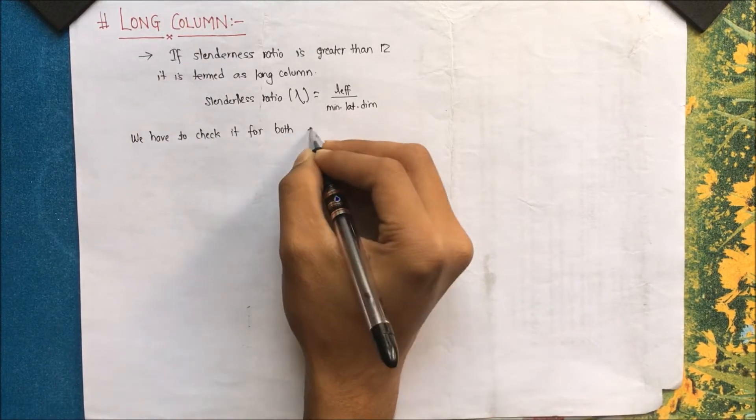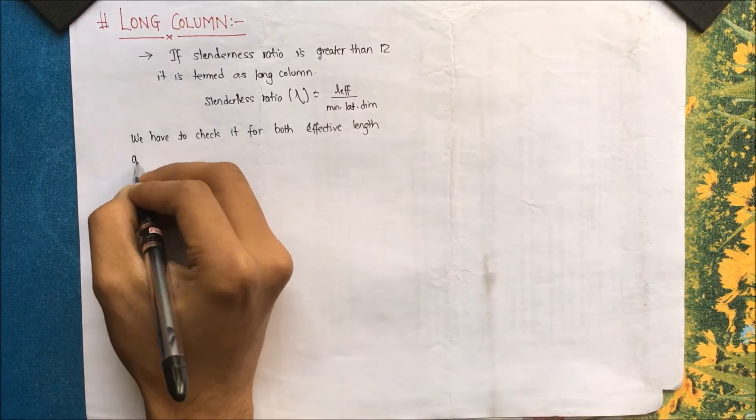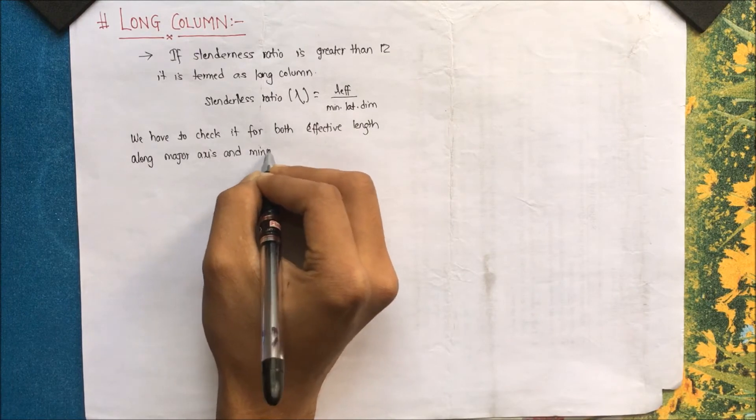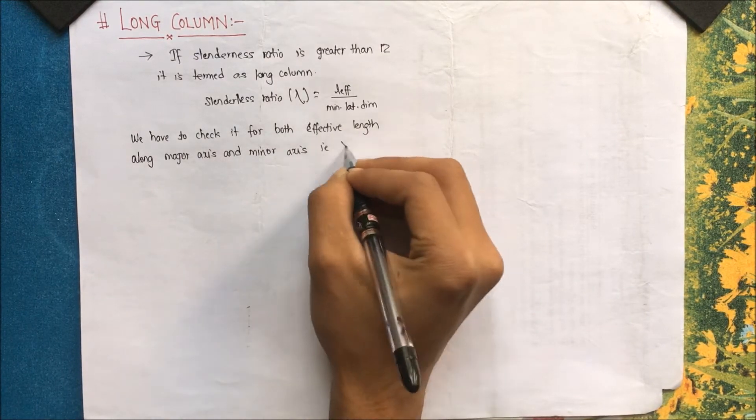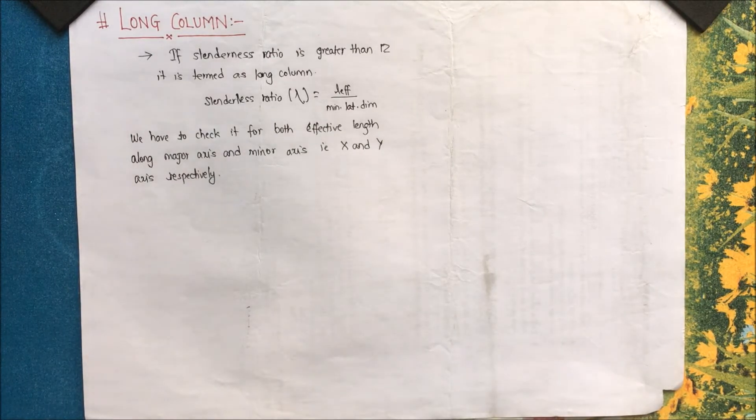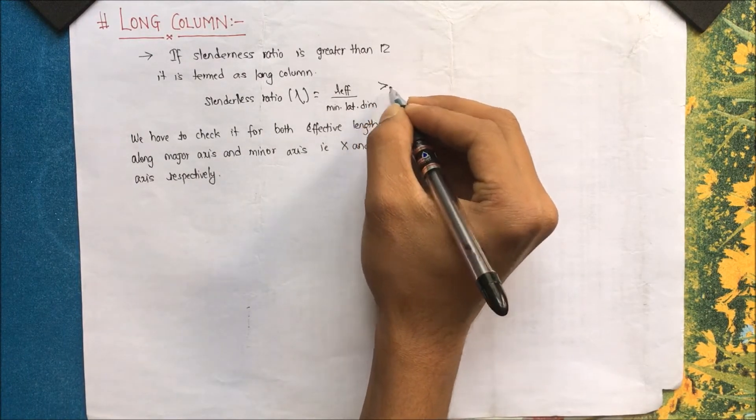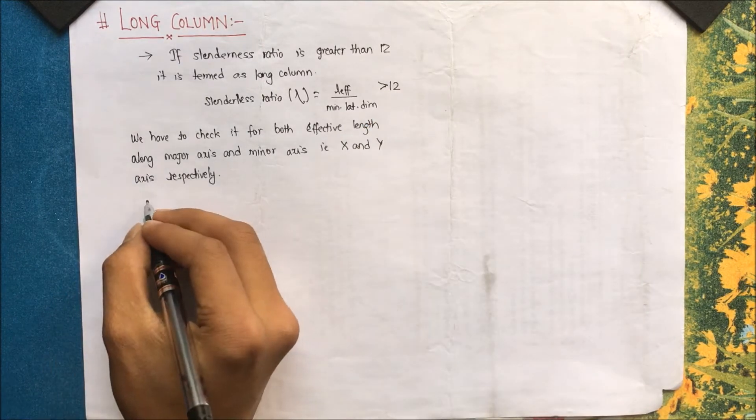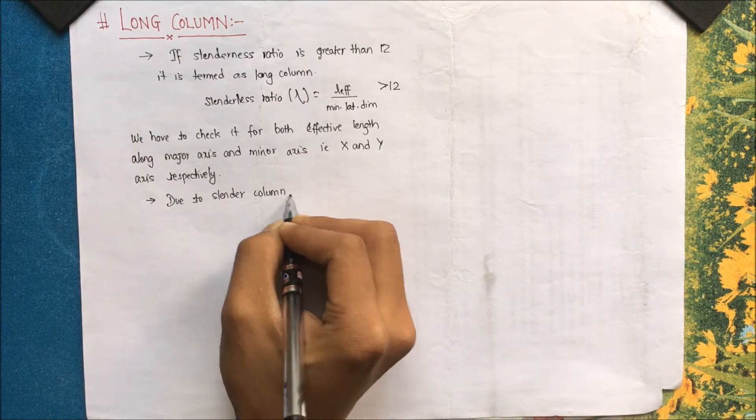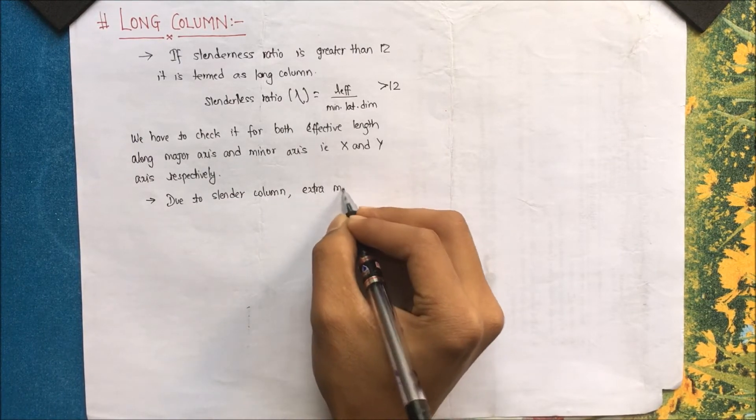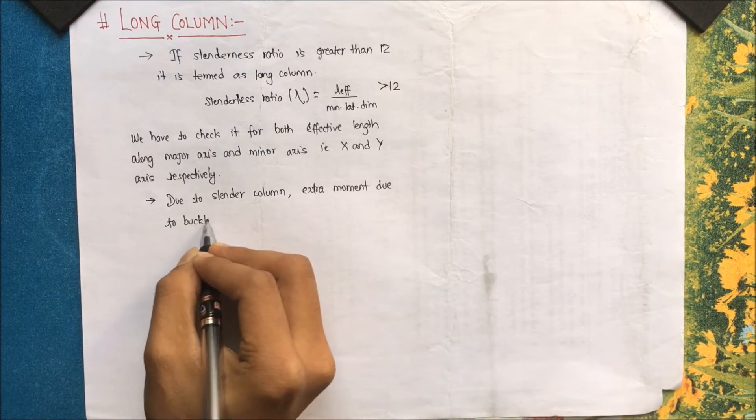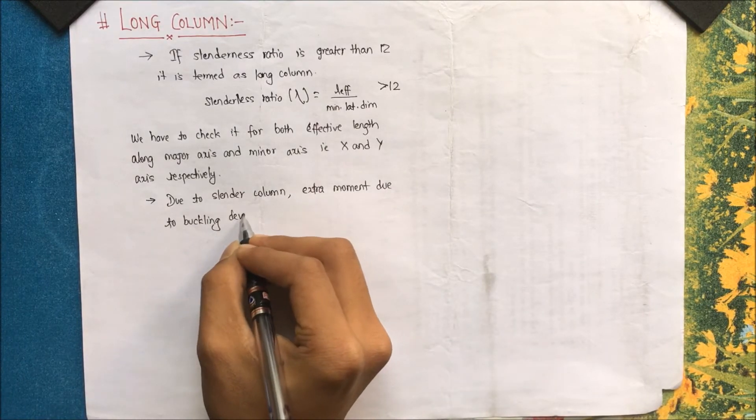We have to check it for both effective length, that is along major axis and minor axis. We are considering major axis as x and y axis respectively. Now if this is greater than 12, then our column is termed as long column. Due to slender column, slender means if the effective length becomes much more greater than that of the lateral dimension, it is termed as a slender structure.